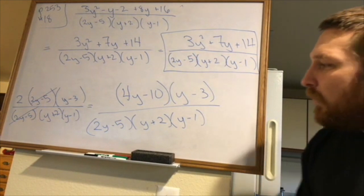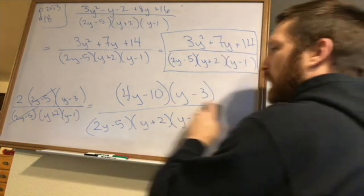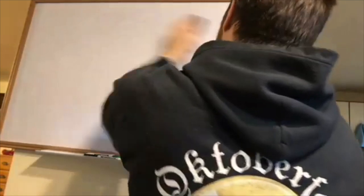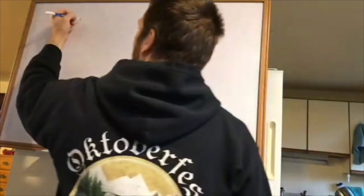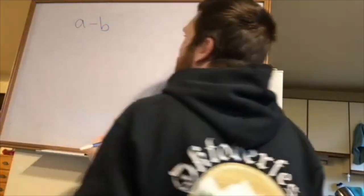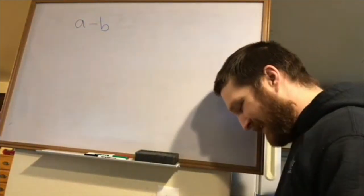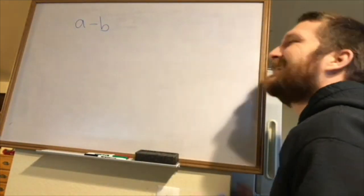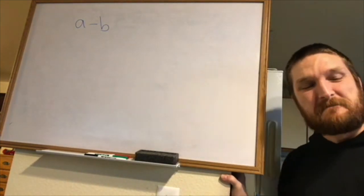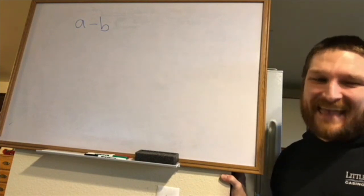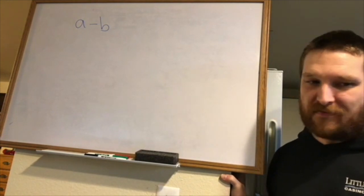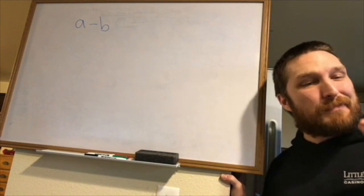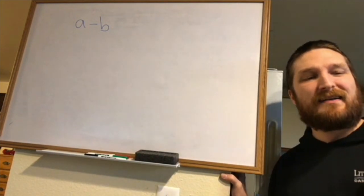Now let's talk about something like A minus B versus B minus A. Can I factor anything out of B minus A? I could factor out a negative one. If I factor out a negative one, then A becomes negative A and B becomes positive B. So A minus B equals negative times (negative A plus B), which is the same as negative(B minus A).